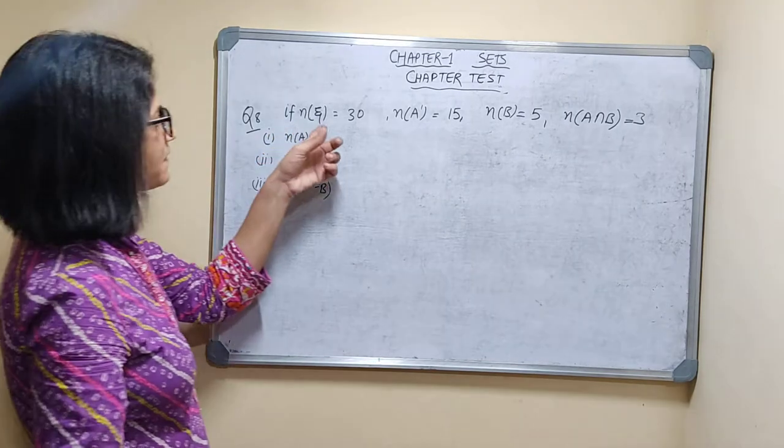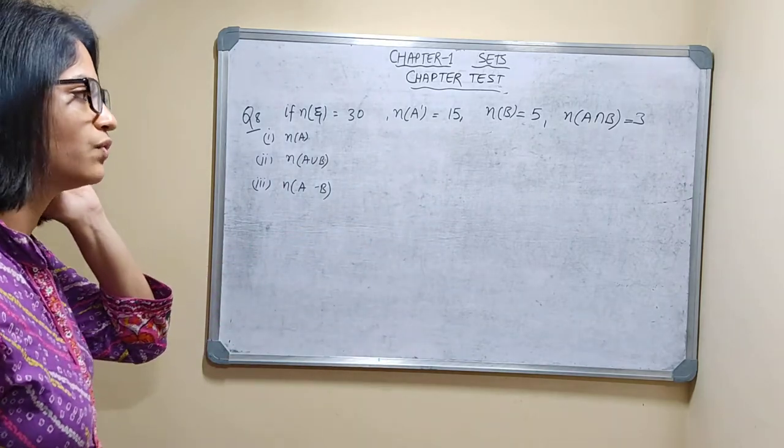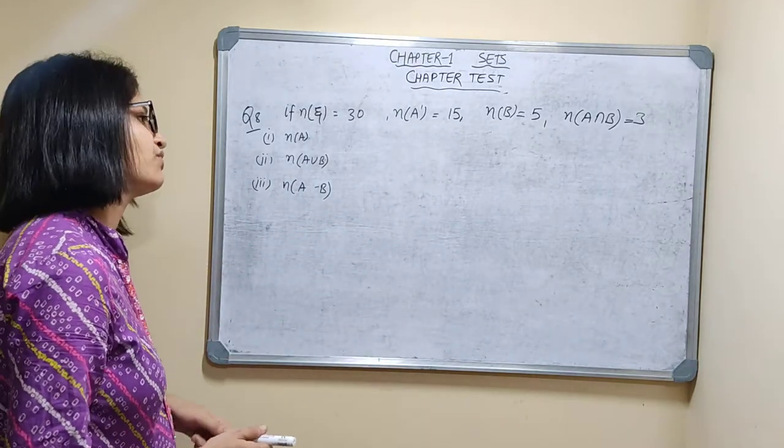Question number 8. If n(ε) is equal to 30, n(A') is equal to 15, and n(B) is equal to 5, then n(A∩B) is equal to what?